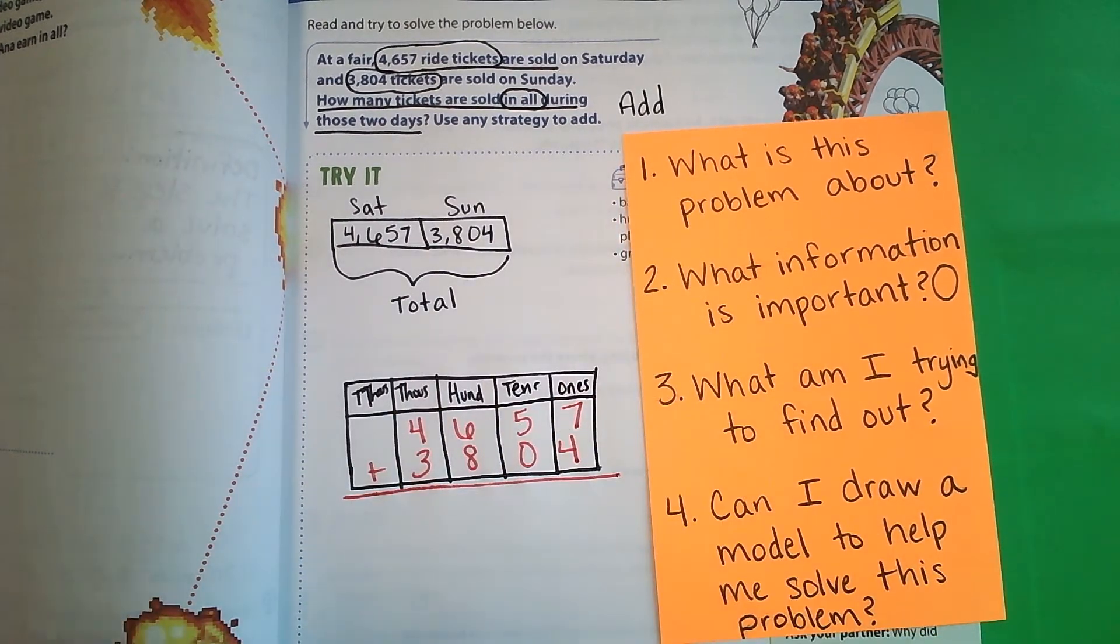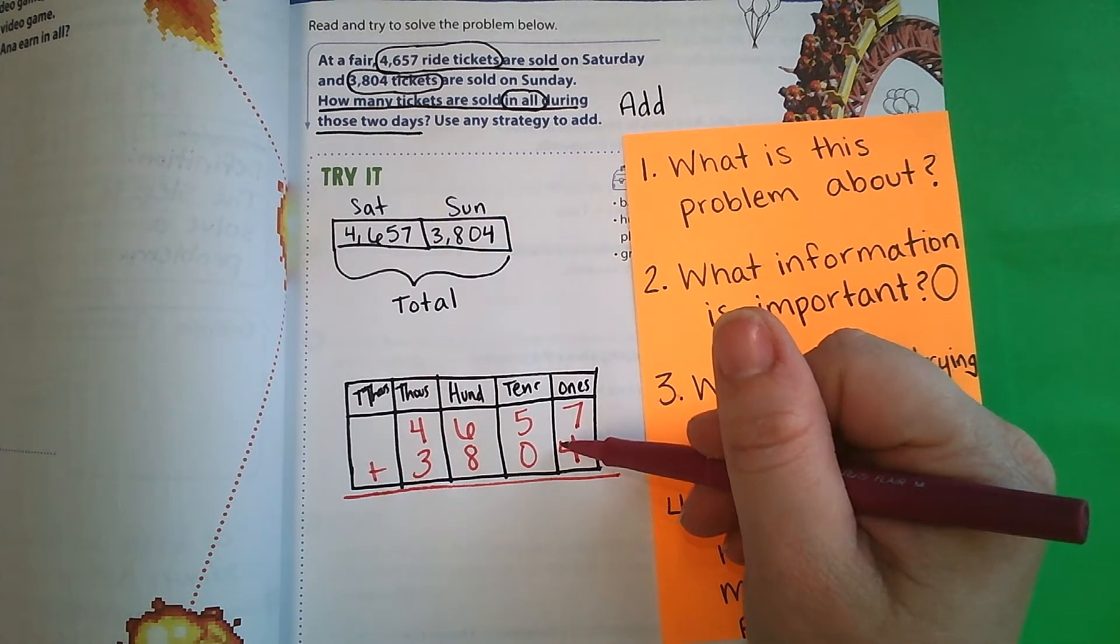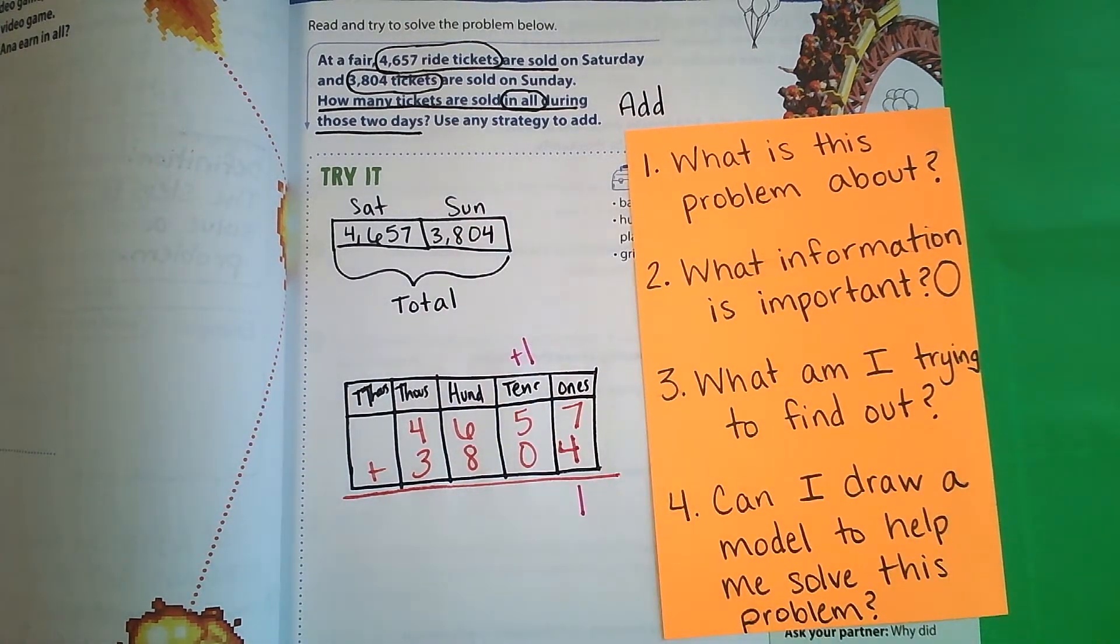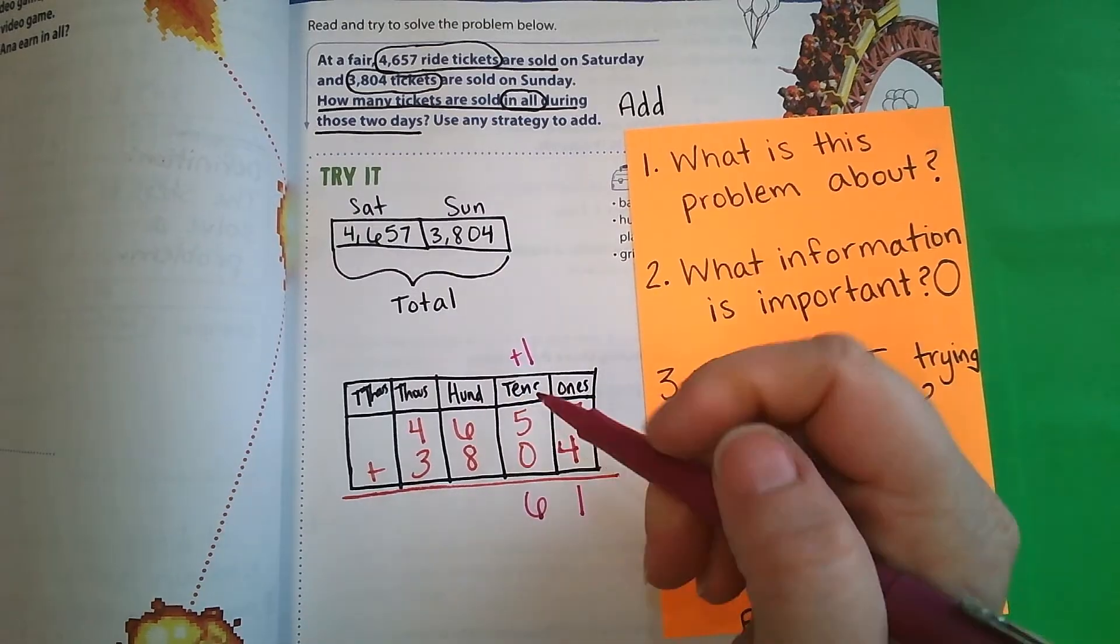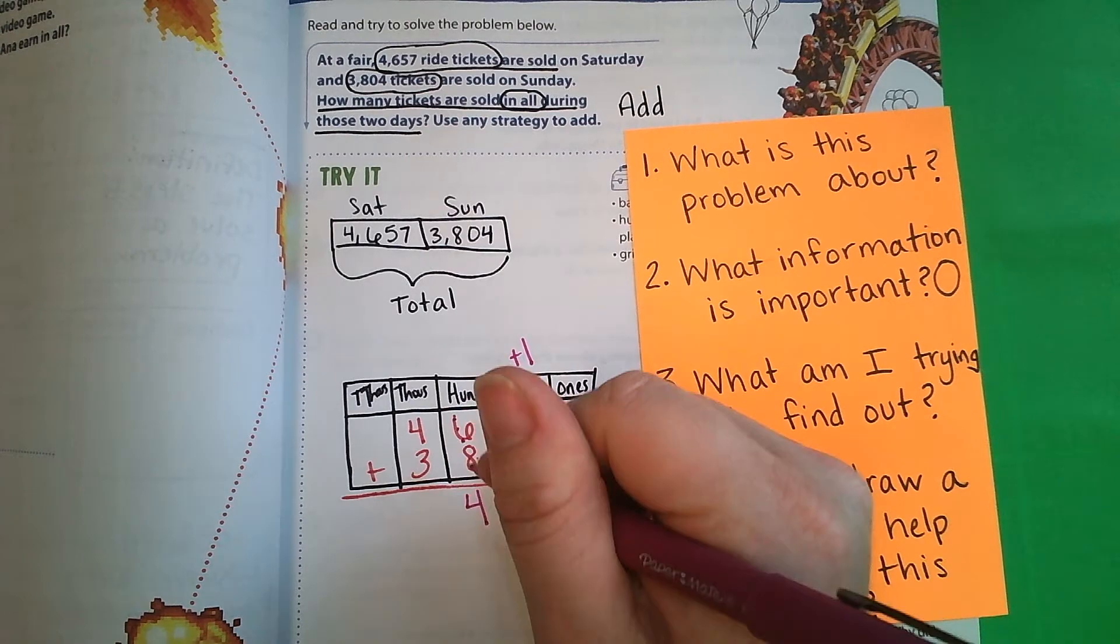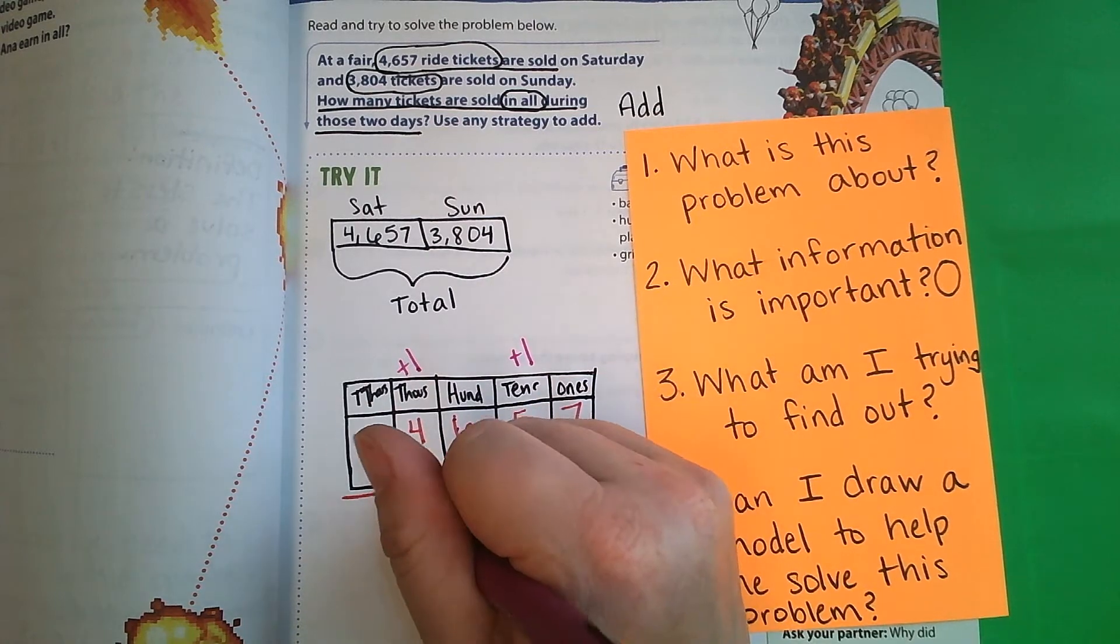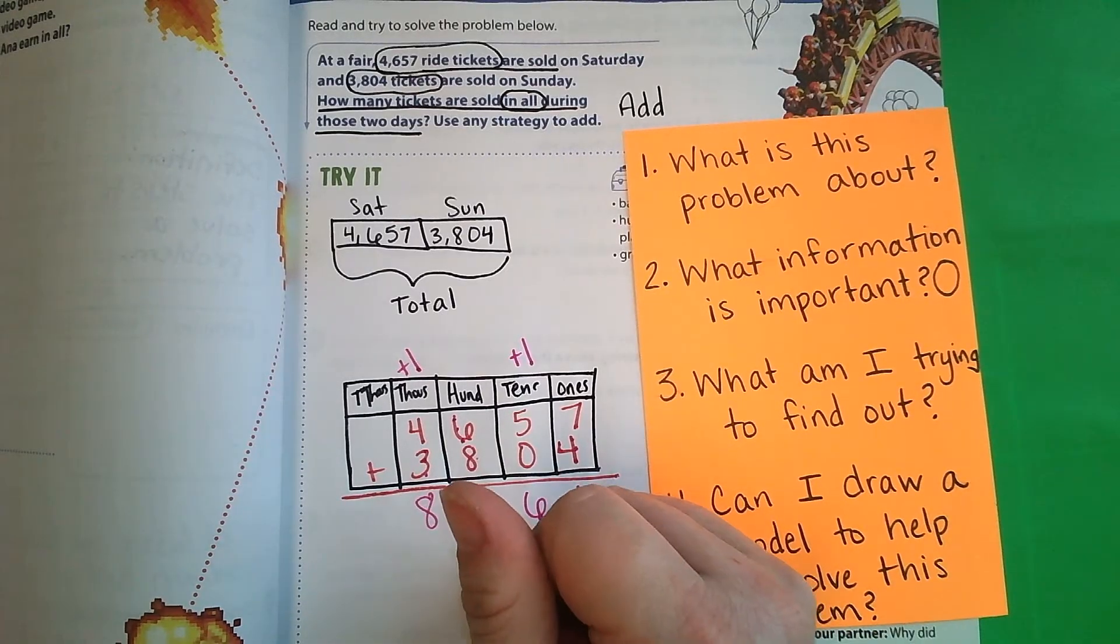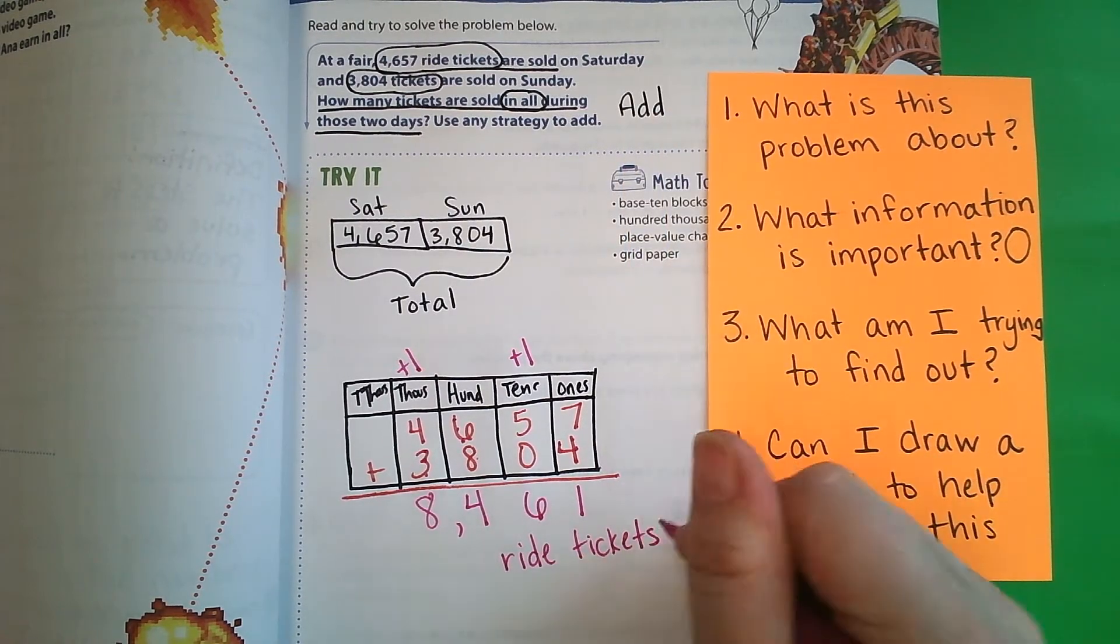7, 8, 9, 10, 11. So my 1 goes here, and then I carry my other 1. 5 plus 0 is 5, plus 1 more is 6. 8, 9, 10, 11, 12, 13, 14. So my 4 goes down here, and I carry my 1. 4, 5, 6, 7, 8, and don't forget your comma. So the answer is 8,461 ride tickets. Do not forget that label. It is very important.